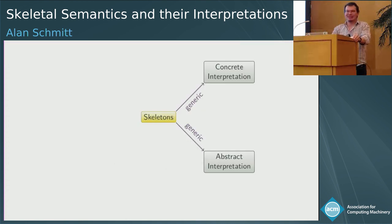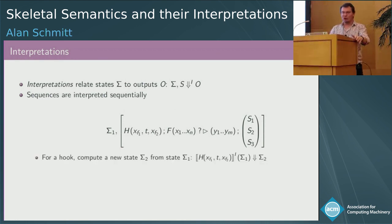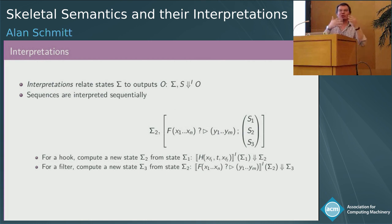Now let's give meaning to the semantics. An interpretation of a semantics basically consists of some input state, output state, the domain of the interpretation. We interpret sequences sequentially. For instance, let's say that you have this skeleton body and you start from state sigma one. To define an interpretation, you need to define how to interpret hooks. A hook from sigma one is going to say we move to sigma two, so we can make some progress interpreting the body. Then the same thing for filters.